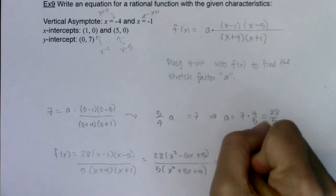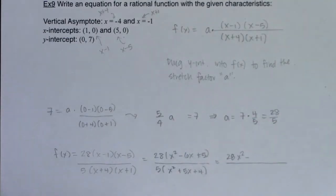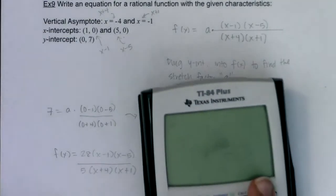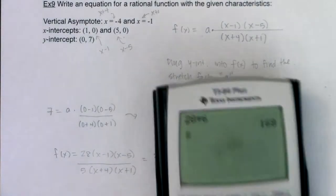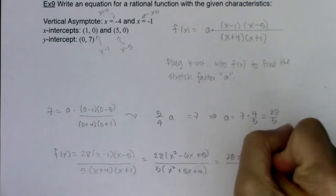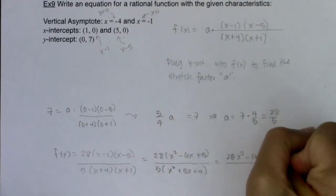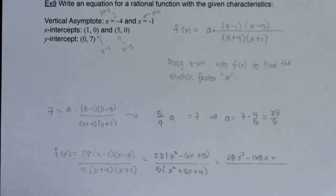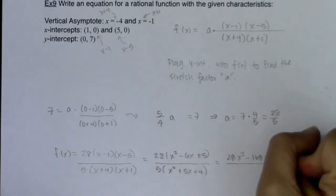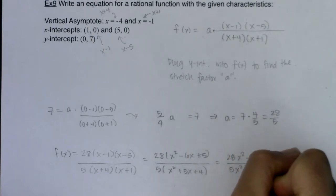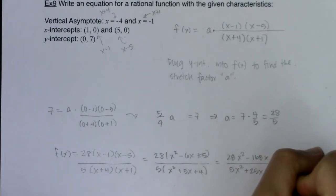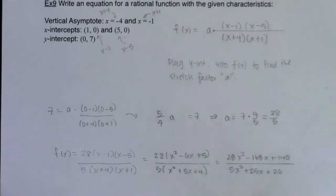Okay. And if I wanted to go further and keep distributing, I could have 28x squared minus, let's see what 28 times 6 is, 168. 28 times 5. Oh, if I just subtract 28, that's actually nice. That's 140. And then we would have 5x squared plus 25x plus 20.